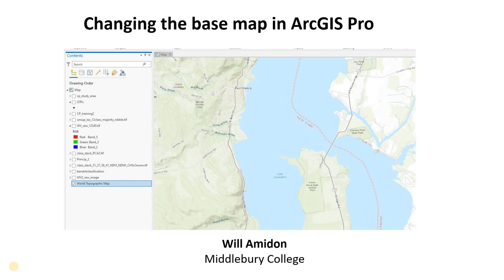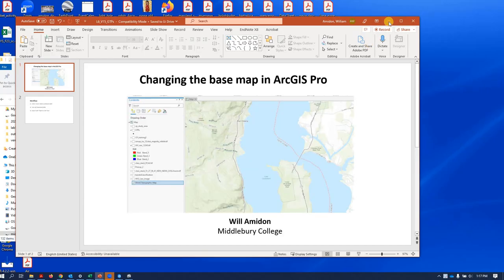Whenever you start a new project in ArcGIS Pro it's going to by default bring up some streaming base map. In this case it's brought up the world topographic map, and when you start a project this will be the only thing that's in there. What's cool about this is you don't have this data on your computer — it's just being streamed off of an Esri server basically. And it's fantastic, and you can change what imagery or map is being streamed to your computer.